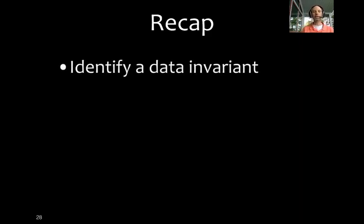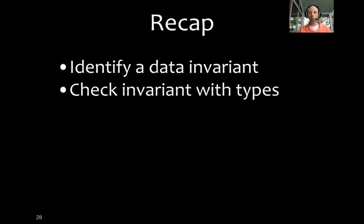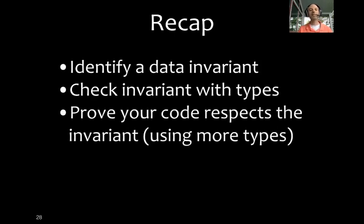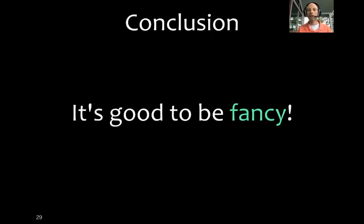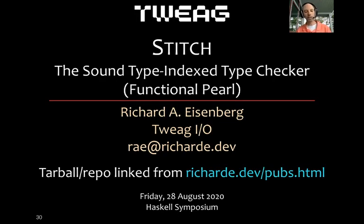Okay, so recap. What did I do here? I identified a data invariant that I wanted. In other words, that expressions were well-typed. I checked that invariant by adding more types on this exp, on my exp type. Then I had to prove that my code respects the invariant. So in the parser case and in this well-scoped AST, that required more types. And then repeat. And doing all of that, we learned that it is good to be fancy because we can have greater assurance in the correctness of our code. And now I'm happy to answer any questions.